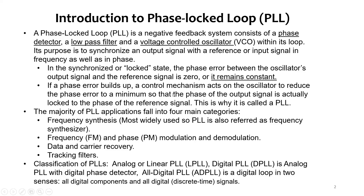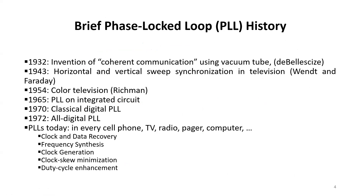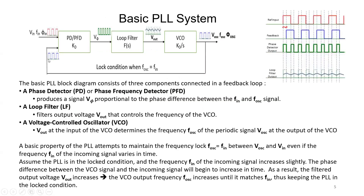In the synchronized or locked state, the phase error between the oscillator's output signal and the reference signal is zero. The basic PLL system consists of a phase detector, a loop filter, and a VCO. The phase detector receives an input signal with frequency f_in and a feedback signal f_osc from the VCO output.